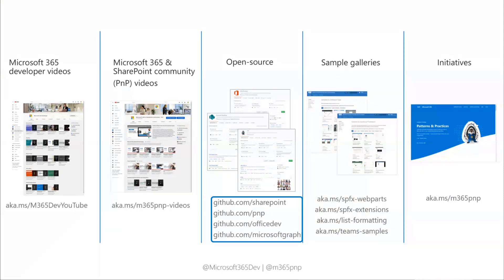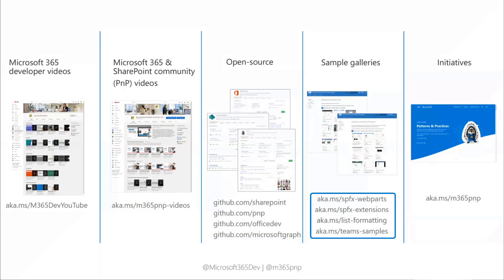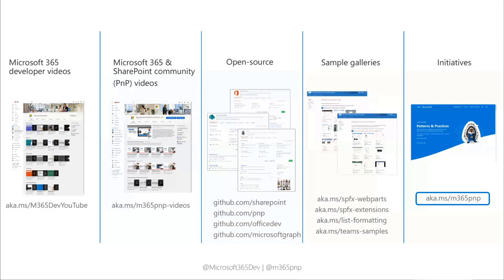If you're looking for what's relevant — samples for React, Teams, or a bot — take advantage of our sample galleries. We have SPFx web parts, SPFx extensions, list formatting, and Teams samples galleries available. In the longer run, we're looking into a consolidated super sample gallery where you can find all different samples related to Microsoft 365 development. If you're confused on how all these things fit together, go to aka.ms/M365PMP — from there you can access community call invites, documentation, samples, projects, and open source content.